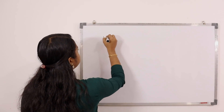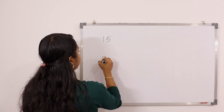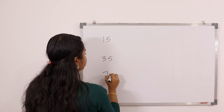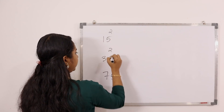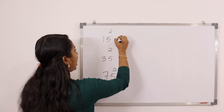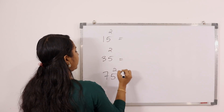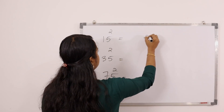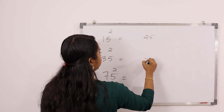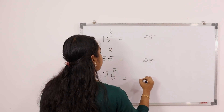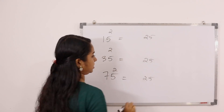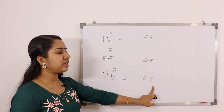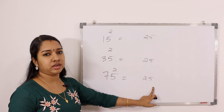15, 35, 75. You get it in the next video. There is also a square in the next video.